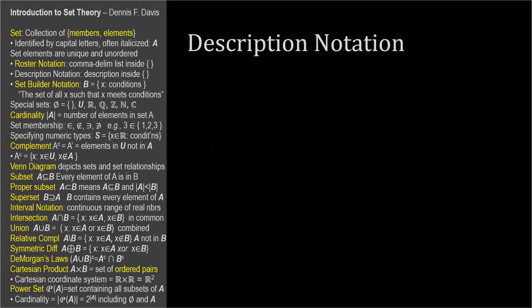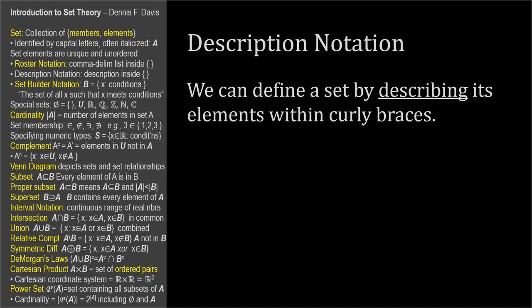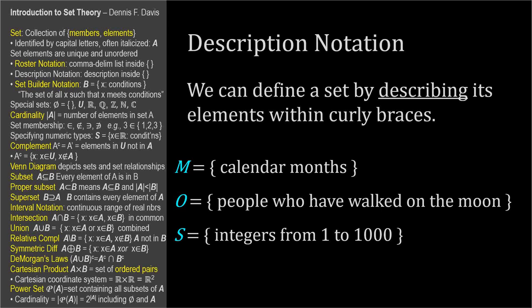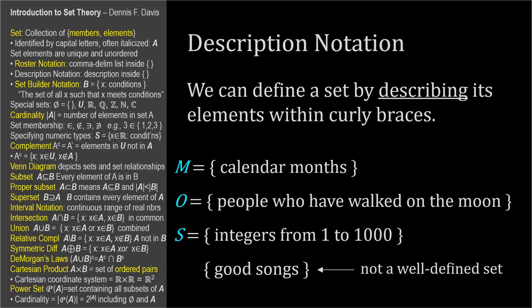An alternative to roster notation is to simply describe the elements of the set within the curly braces. For example, M equals the set of calendar months. O equals the set of people who have walked on the moon. We can describe numerical sets too — S equals the set of integers from 1 to 1000. The description should be precise and unmistakable. For example, the set of good songs would not be a well-defined set, because not everyone would agree on the set's elements.